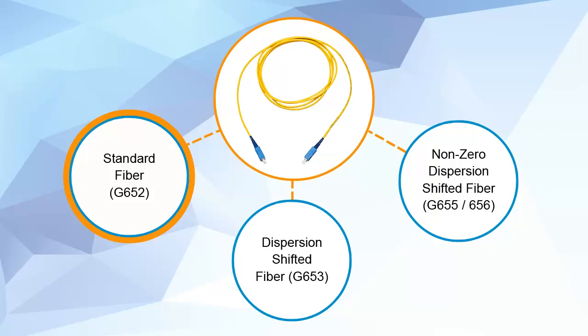Cable manufacturers have to consider these effects when designing different types of fiber for different applications and different needs, such as standard fiber G652, dispersion shifted fiber G653, or non-zero dispersion shifted fiber G655 or G656.